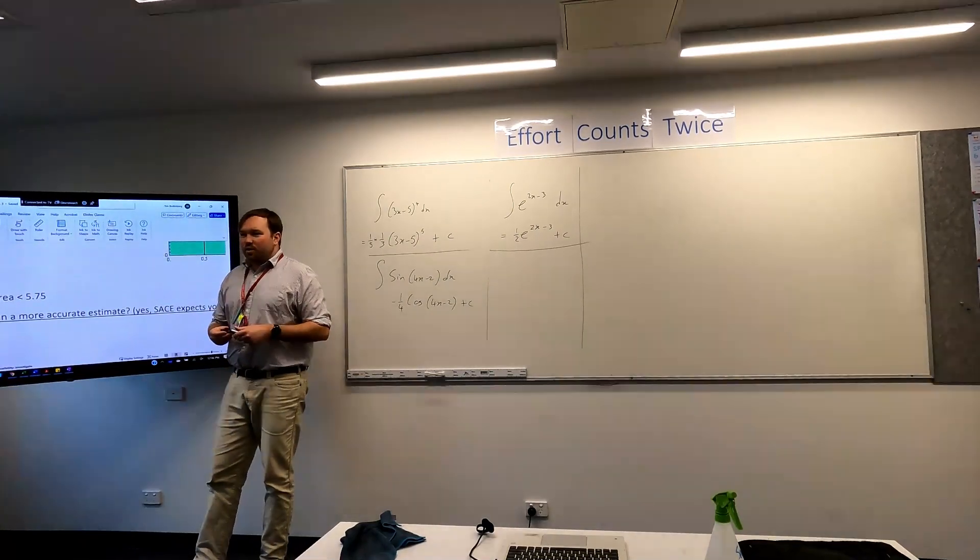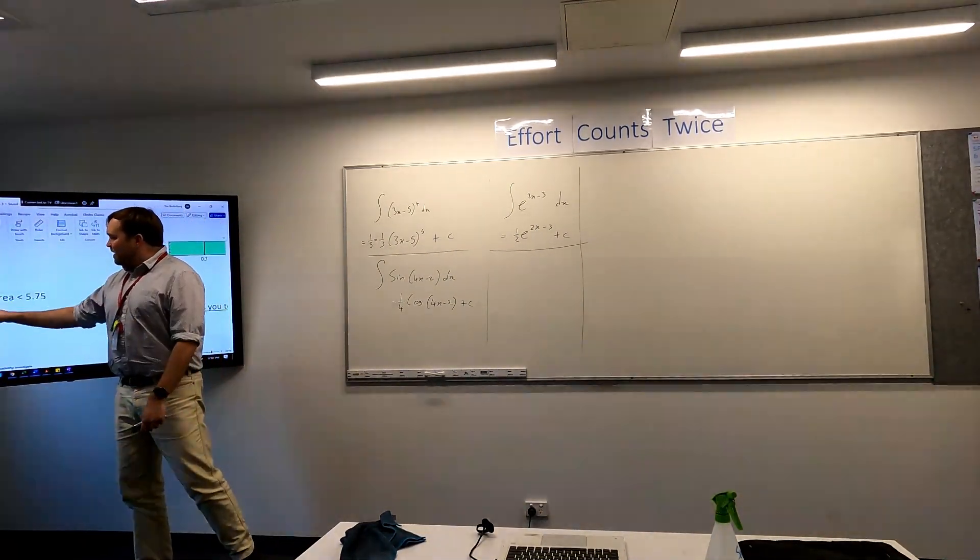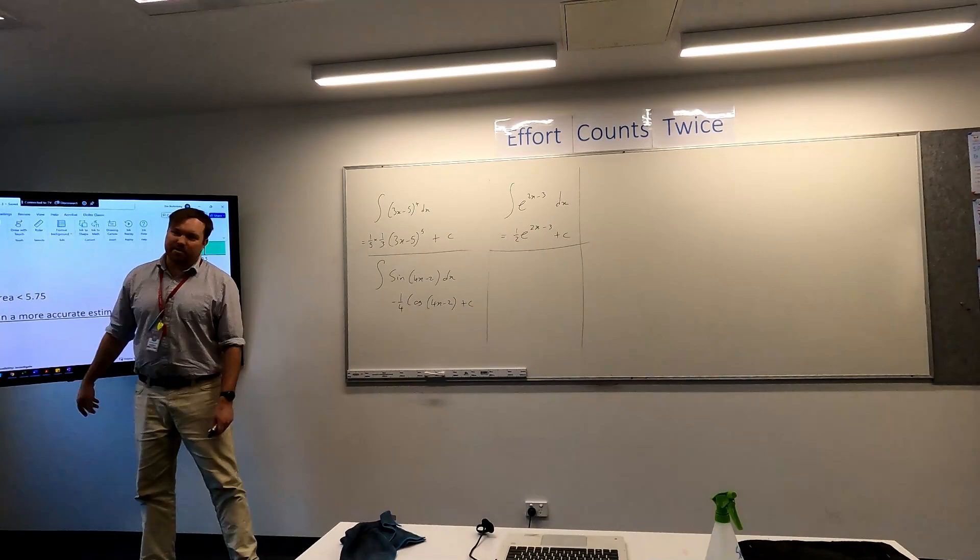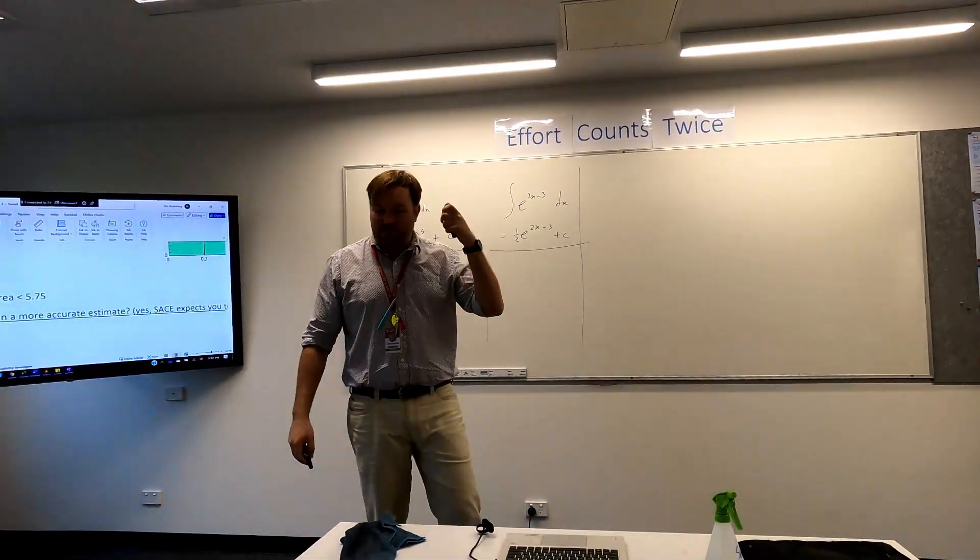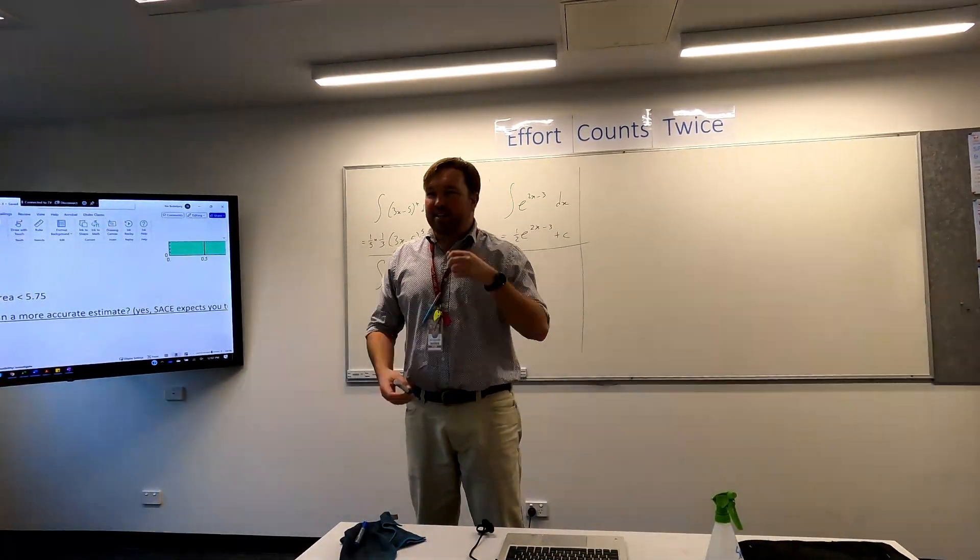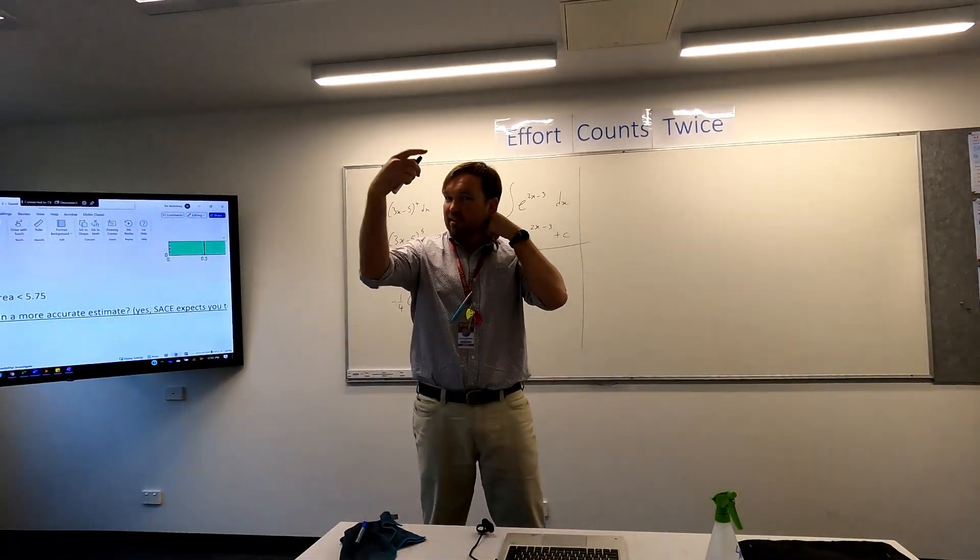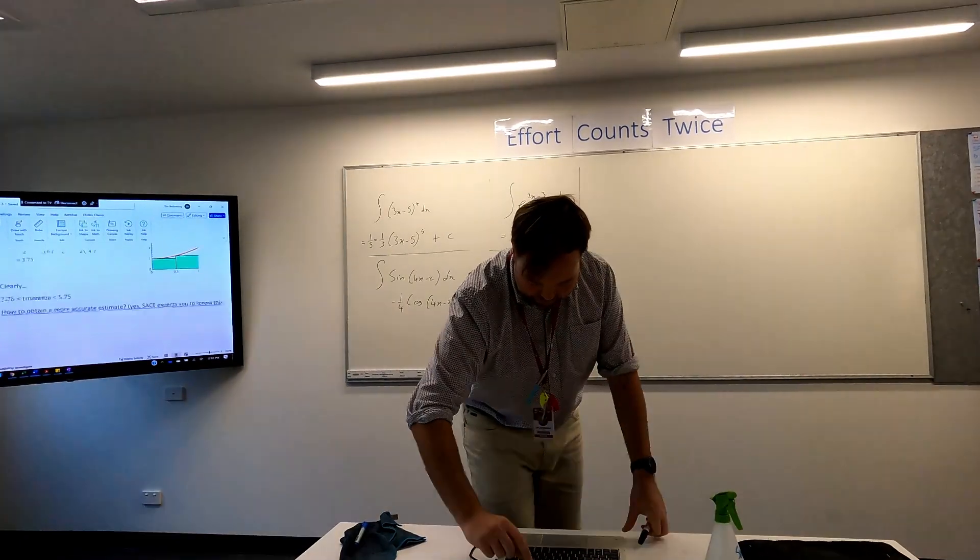What comes next is a sort of squeeze theory. Like, how do we get a narrower band for this? How do we get a better estimate? And SACE expects you to know, at least theoretically, how to get a better estimate. Any idea how to get a better estimate? Make the rectangles skinnier. Good. More rectangles.